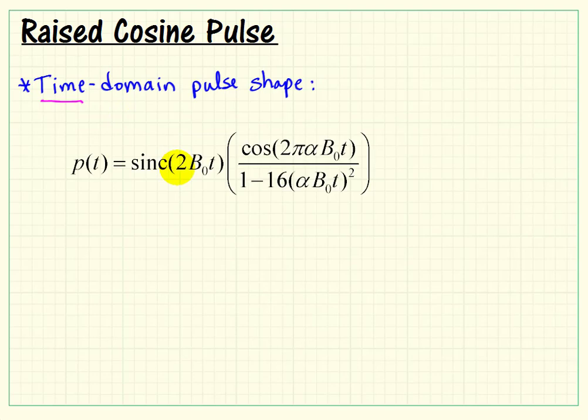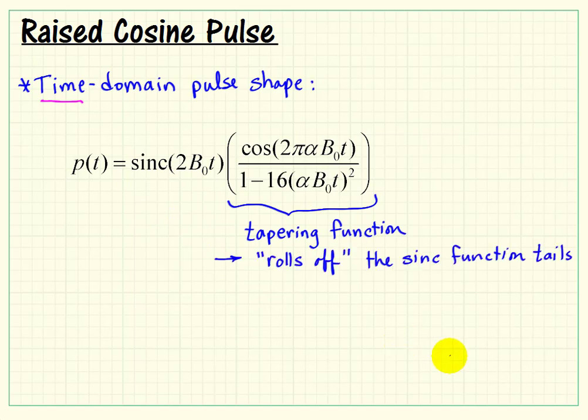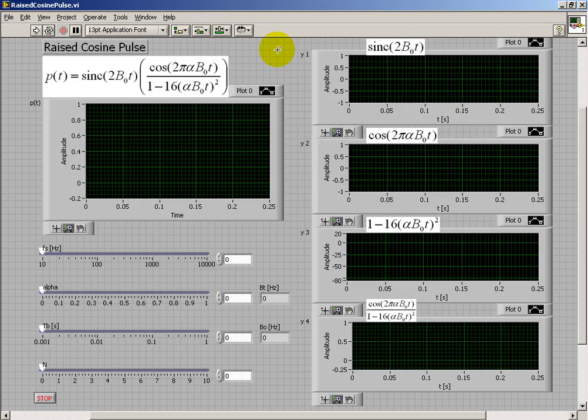Now let's consider this pulse in the time domain. Doing the inverse Fourier transform, it turns out that this particular pulse shape is the sinc function times this other somewhat elaborate function called the tapering function, and it rolls off, so to speak, the sinc function tails. For that reason, alpha is also called the roll-off factor. To better understand the time domain pulse, let's consider the three major constituents of that pulse shape.